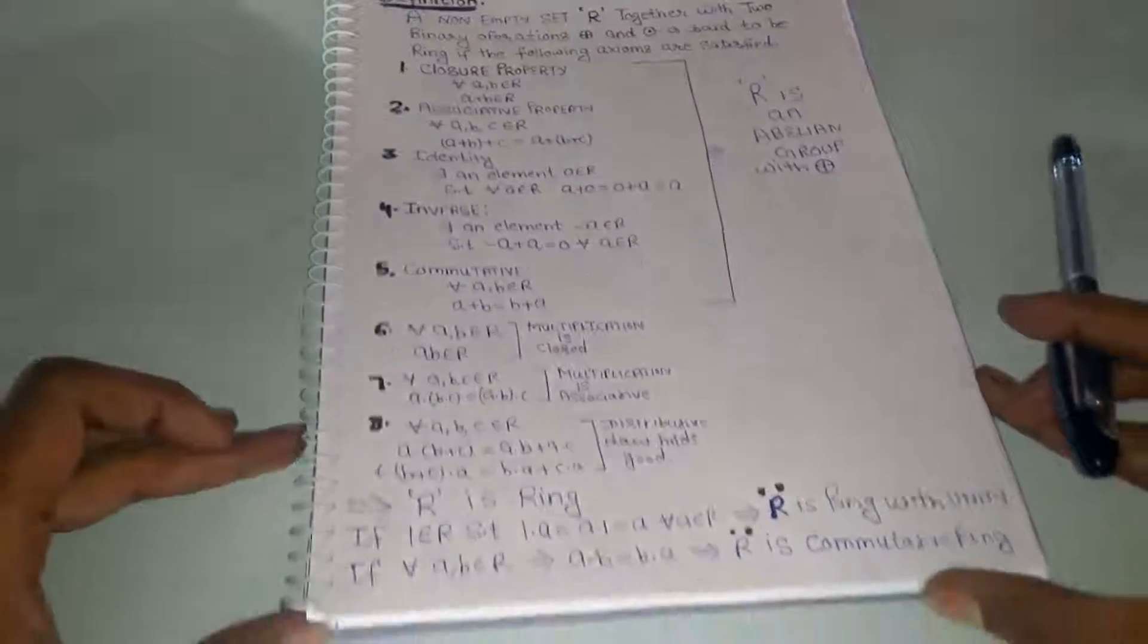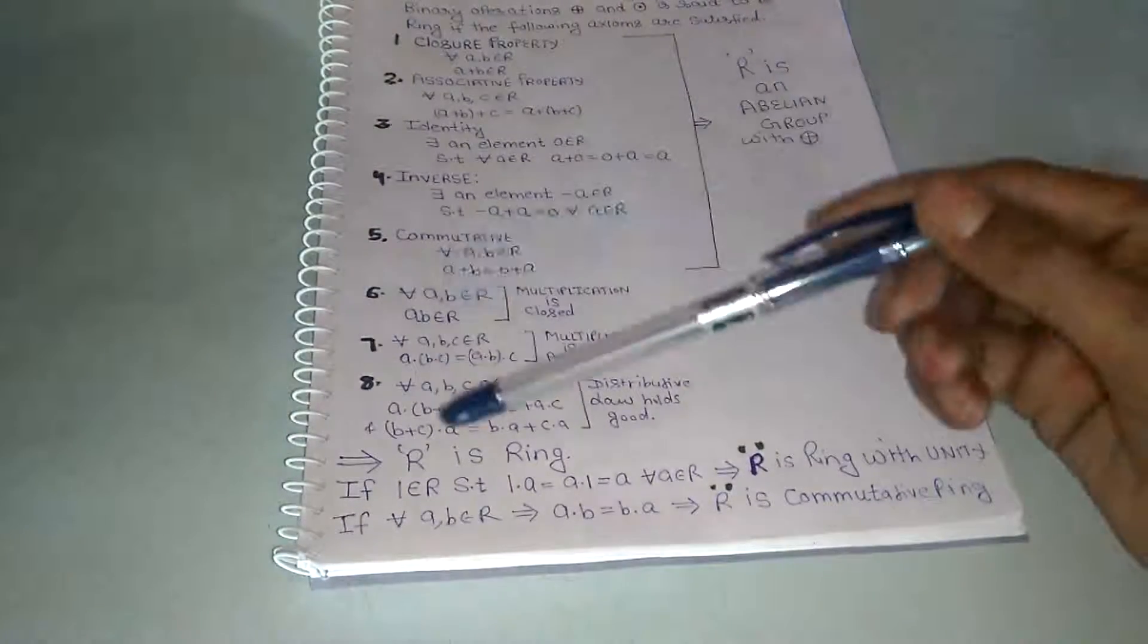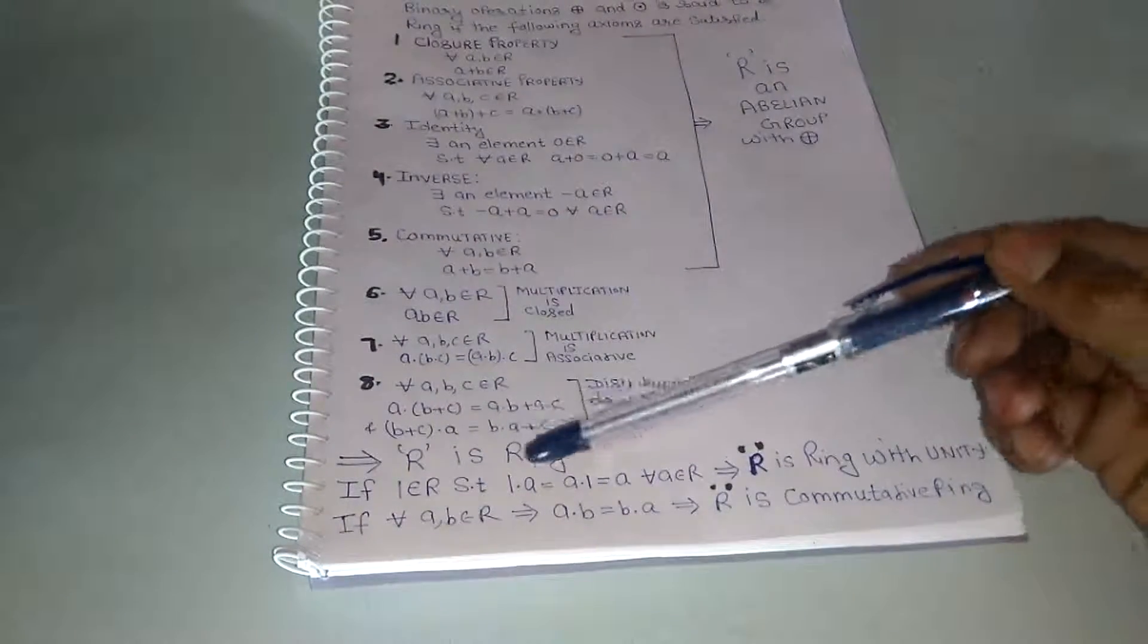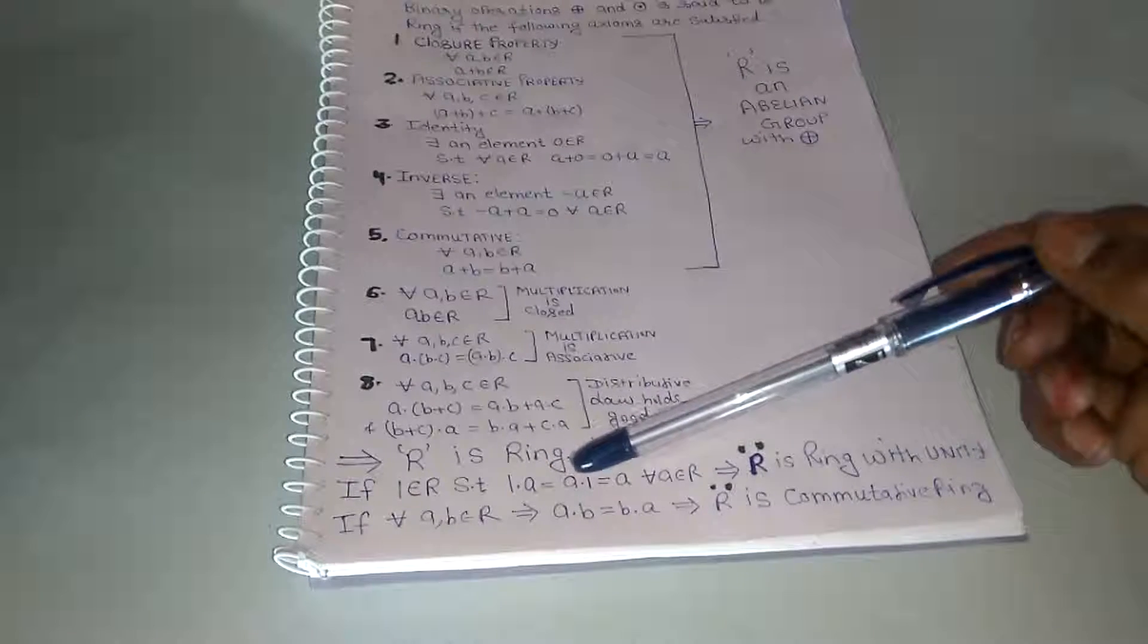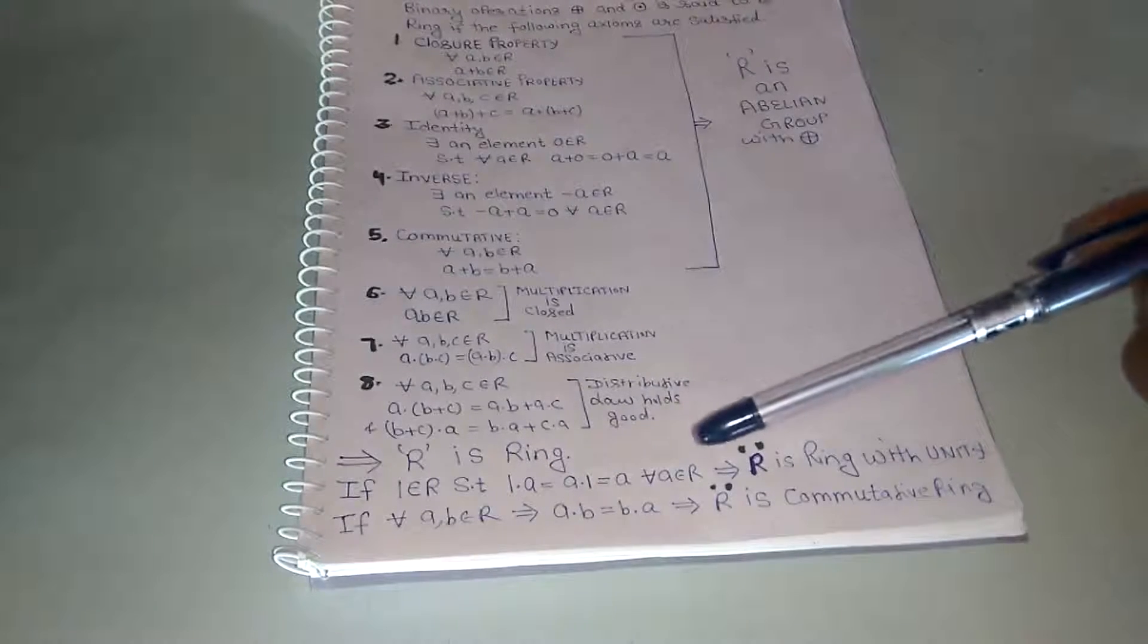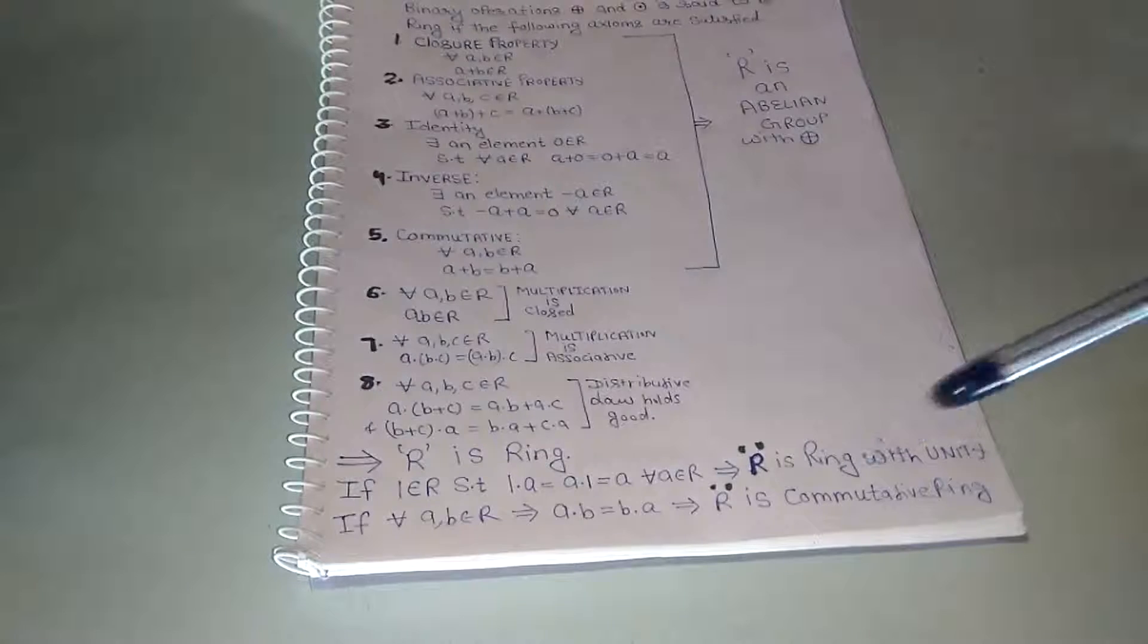If one belongs to R such that one into A is equal to A into one is equal to A for all A belongs to R, then R is a ring with unity.